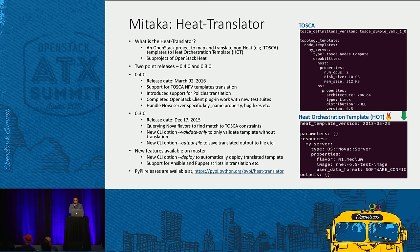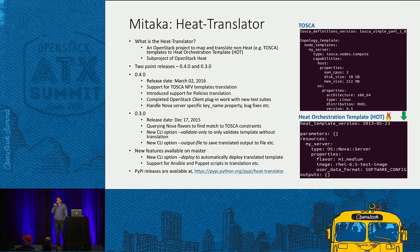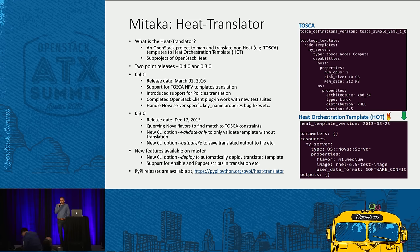About new features: similar to the parsing side, we added translation for NFV and for policies. We completed work on the OpenStack client side with new test suites. I want to mention that we do run into challenges when we translate — there is no one-to-one mapping for everything. For example, TOSCA has a constraint-based flavor and image, whereas Heat takes the flavor and image name itself. Also, the key name property of Nova is commonly used in HOT templates but there's no such concept in TOSCA, so we let users provide the key name as an argument to the translator.